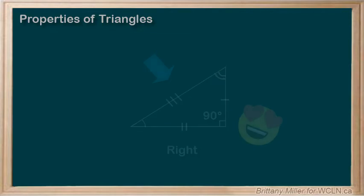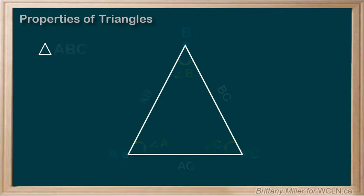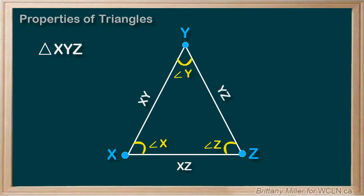In conclusion, when you see triangle ABC, it refers to a triangle labeled like this. The letters don't have to be A, B, and C; they could be anything. We could have triangle XYZ with angle X, angle Y, and angle Z, and sides XY, YZ, and XZ.